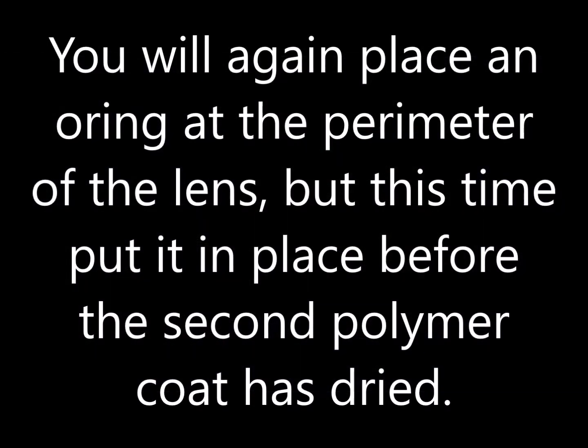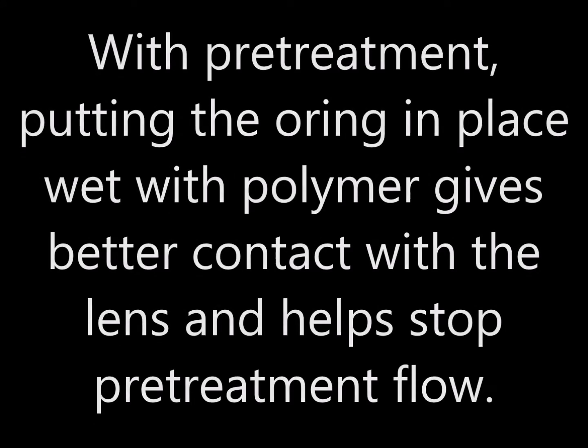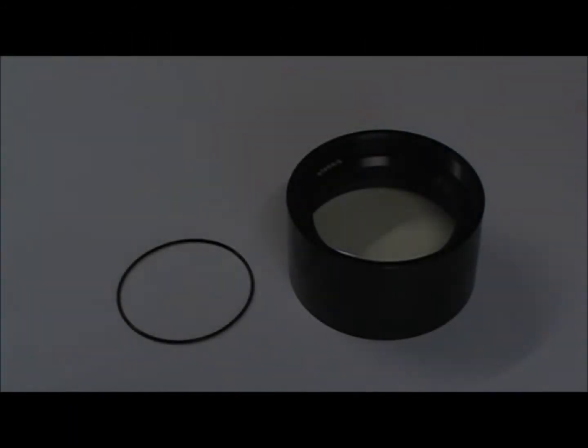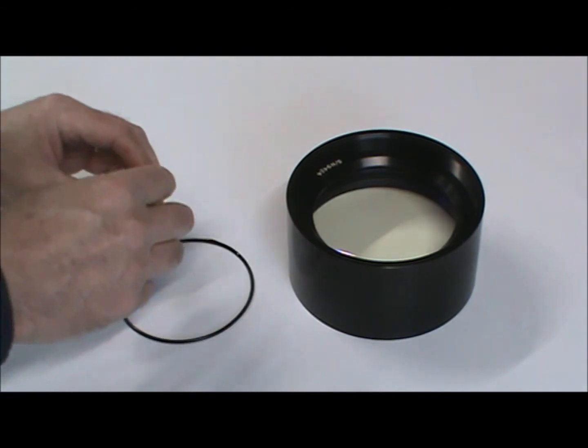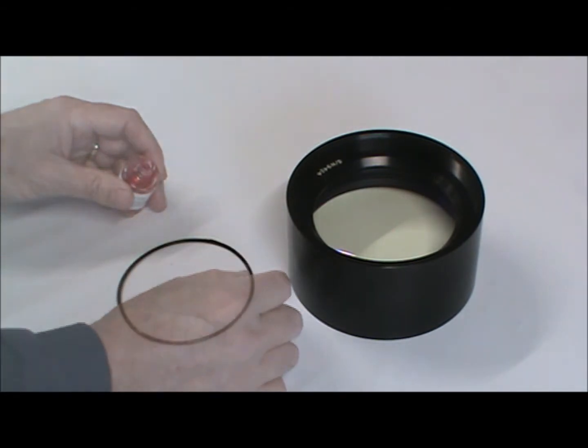Start by applying polymer to one side of your o-ring, then setting it in place before the polymer dries. When we utilize an o-ring to stop only polymer, as seen in our other videos, we allow it to fully dry. But with the pretreatment, you want to lay the o-ring in place before it's dry, so it has better contact with the optic surface.